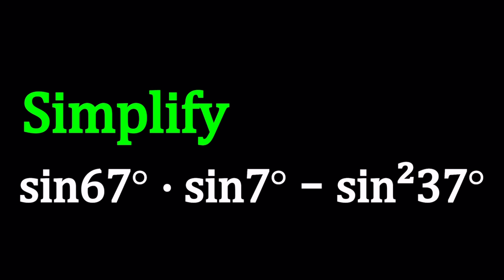We have sine of 67 degrees multiplied by sine of 7 degrees minus sine of 37 degrees squared. I use the degree symbols just to make sure that you know that they're in degrees, but from now on I'm not going to write the degree symbol because I don't like writing it.